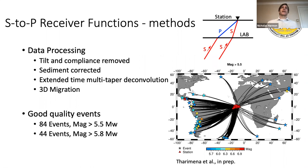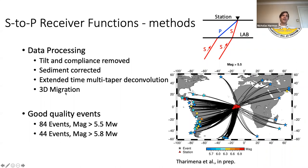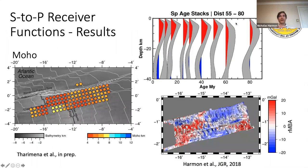Going back to the lithosphere-asthenosphere boundary — we use S-to-P receiver functions to image the oceanic lithosphere-asthenosphere boundary, applying a whole bunch of corrections including tilt, compliance, and sediment corrections. We use an extended time multi-tapered deconvolution to highlight phases converted at either the Moho, the lithosphere-asthenosphere boundary, or deeper. We were pretty lucky to have a high number of usable events. An S wave comes in, gets converted at the lithosphere-asthenosphere boundary to a P wave, and arrives before the main S phase — we calculate our receiver functions based on that.